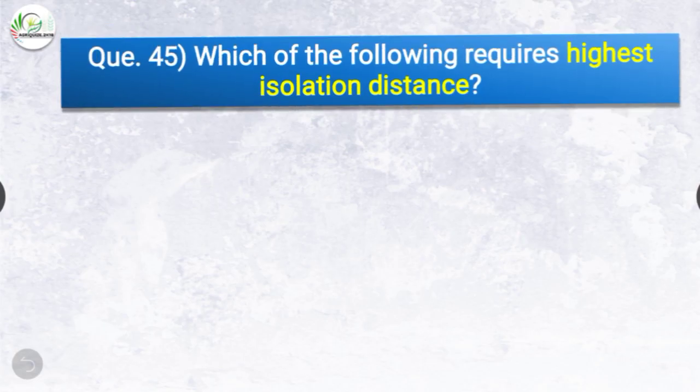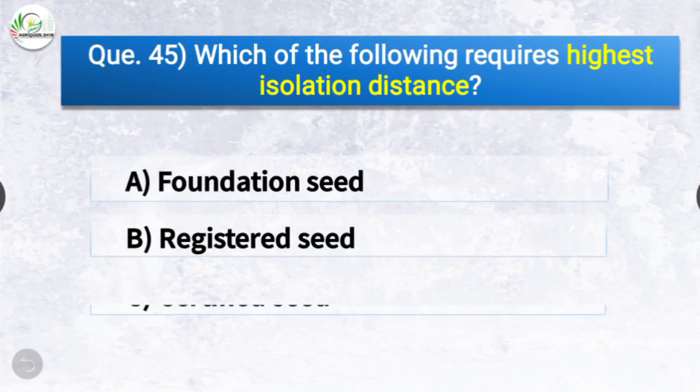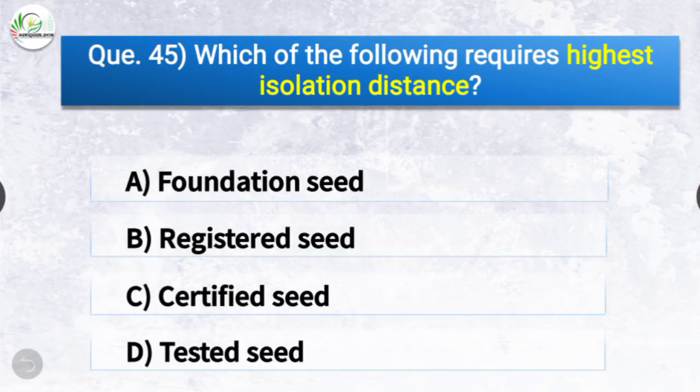Question number forty-five: Which of the following requires the highest isolation distance? The options are foundation seed, registered seed, certified seed, or tested seed. The correct answer is option A — foundation seed. Foundation seed requires the highest isolation distance.